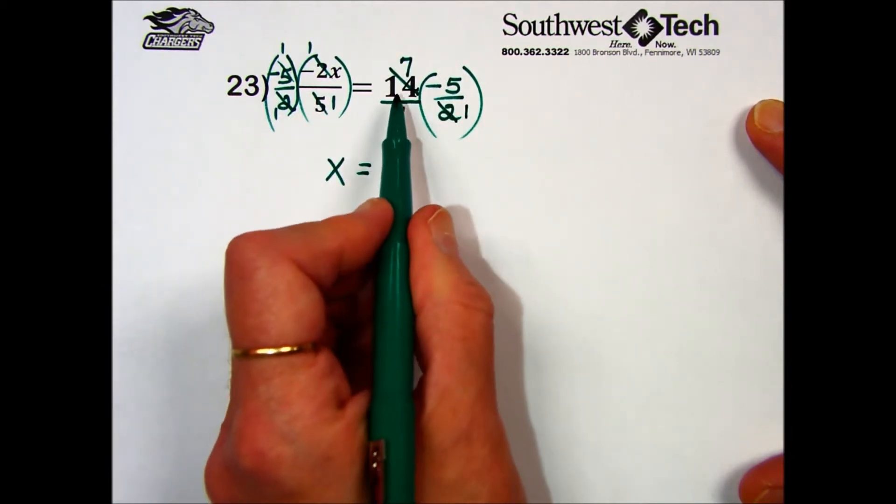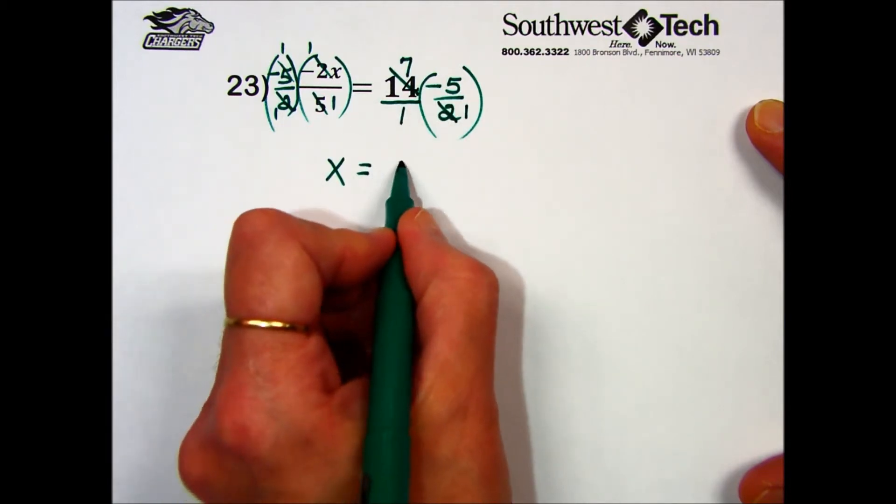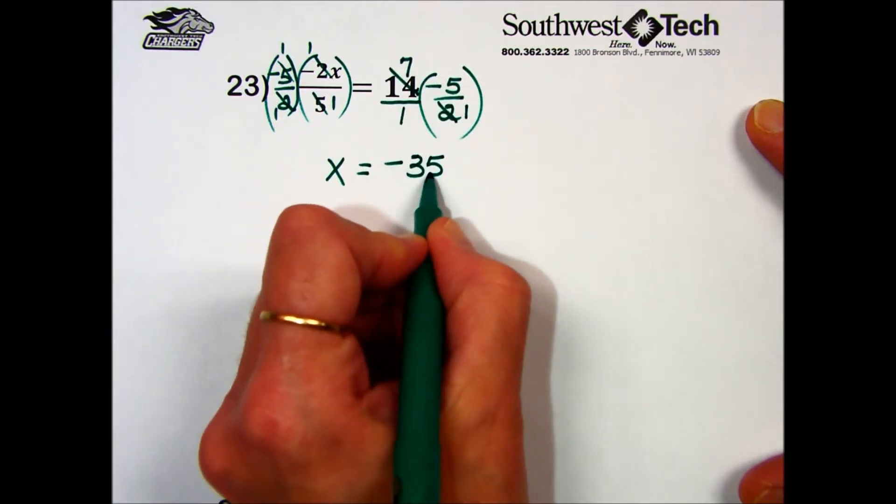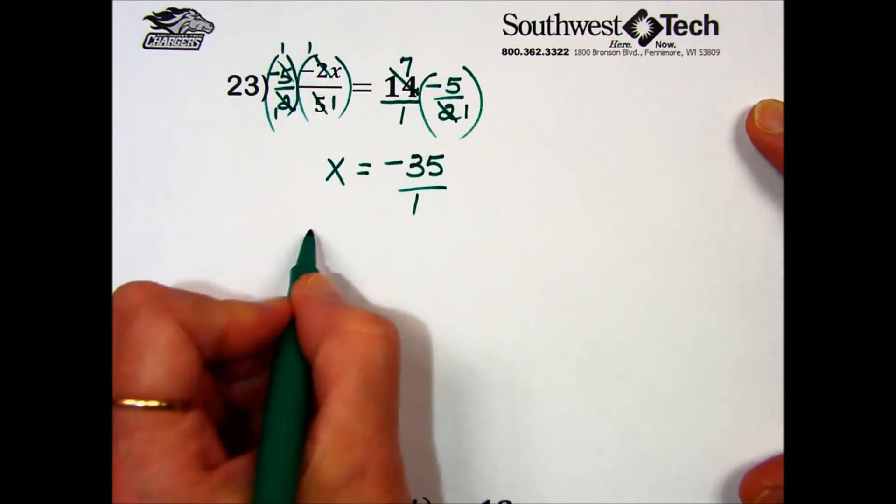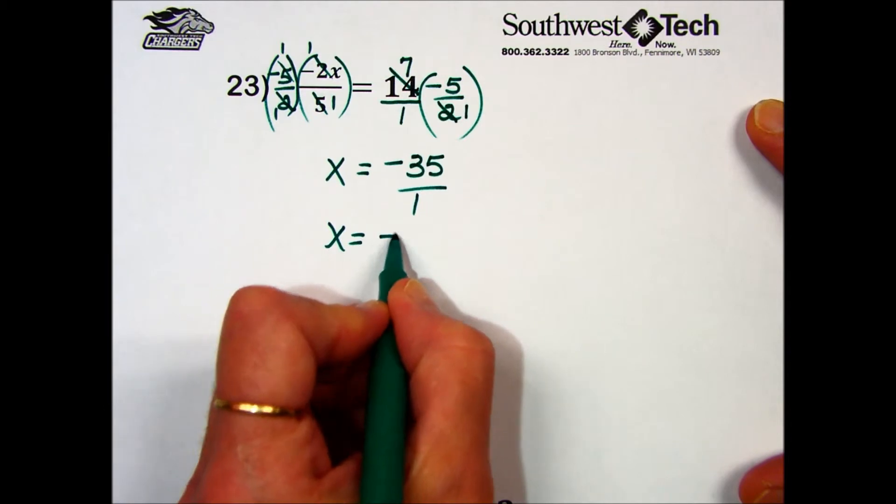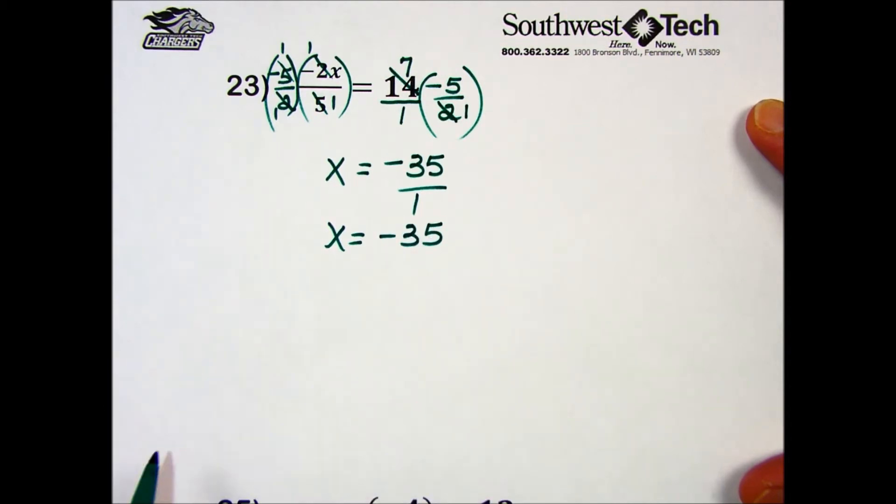Leaving us with 7 times negative 5 in the numerator, resulting in negative 35. 1 times 1 is 1 in the denominator. Negative 35 divided by 1 leaves us with negative 35 for our solution.